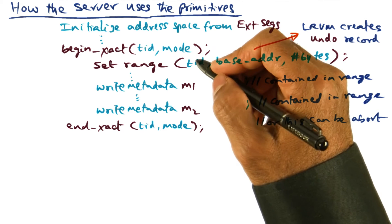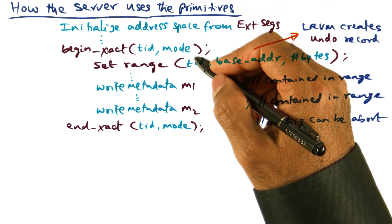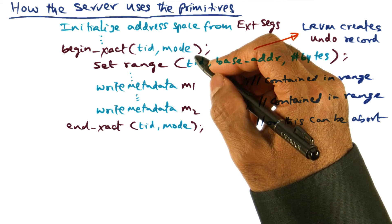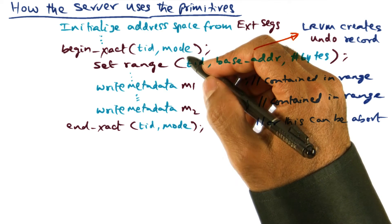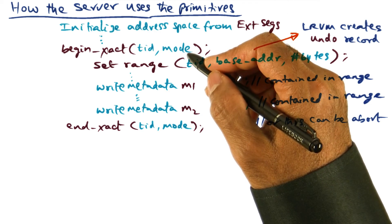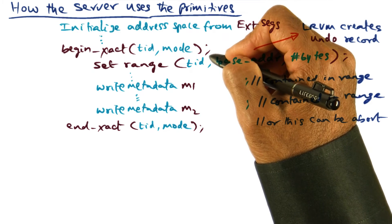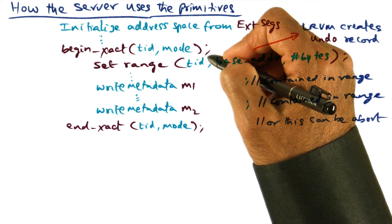So in other words, if the developer is absolutely certain that his transaction is never going to abort, then he can specify a no restore mode for this transaction, which tells RVM that look, this transaction is never going to abort.